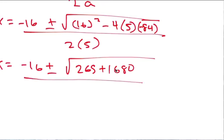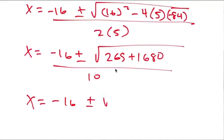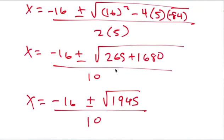We add 1680 to 265 over 10. So x equals negative 16 plus or minus the square root — let's see if it's a perfect square. I didn't write it down. 680 plus 65 gives us the square root of 1945. It is not a perfect square, so let's factor it out.